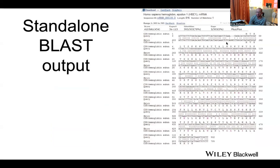If you run BLAST on the command line, you get a text output showing the alignment. For example, a near-perfect DNA match might differ by three nucleotides at the beginning, with lines showing identity. In this case there's about 78% identity at the DNA level, which is quite high.